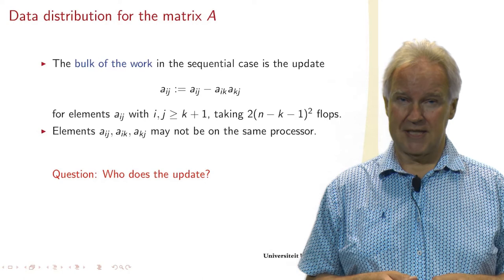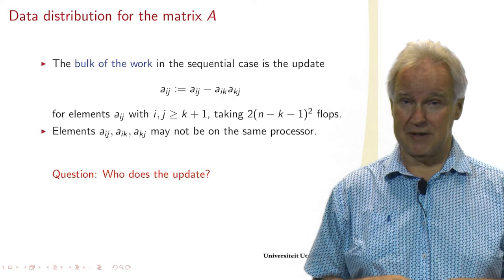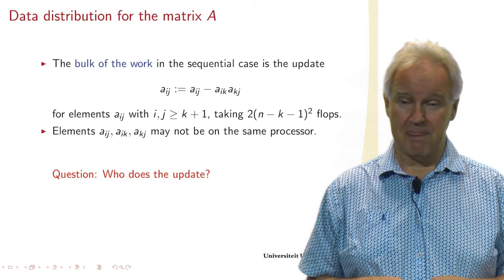So this has a total of 2 times N minus K minus 1 squared flops. So this is the main part of the work.